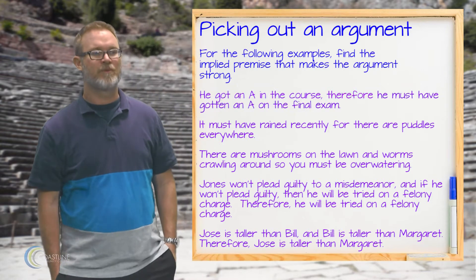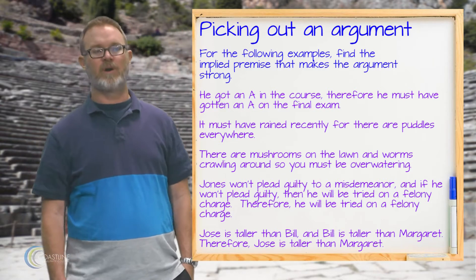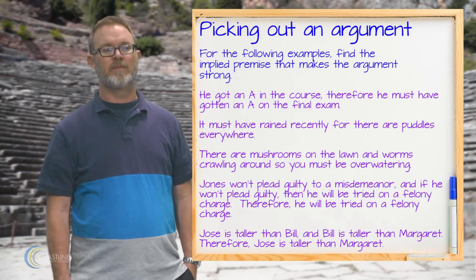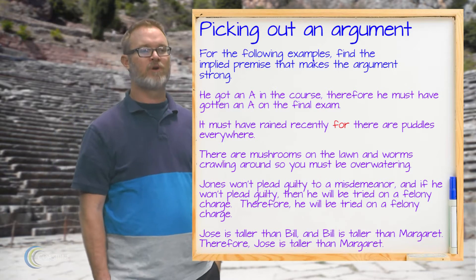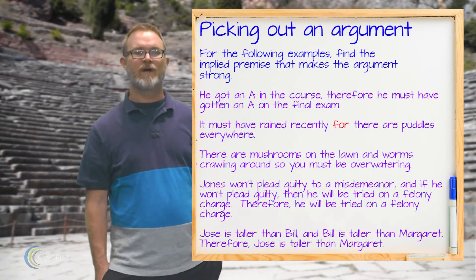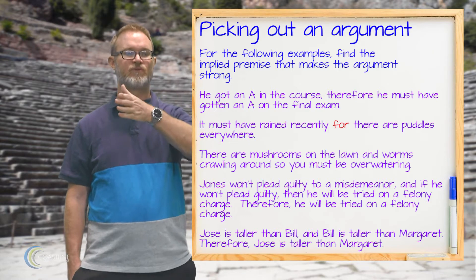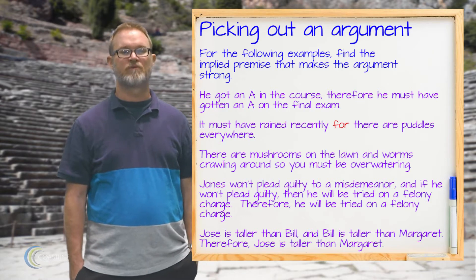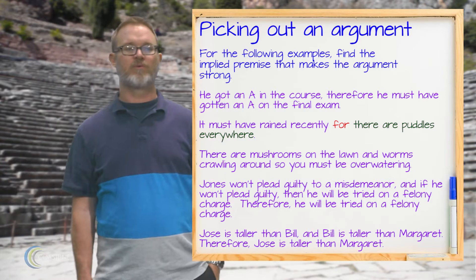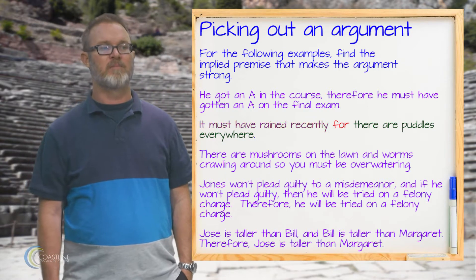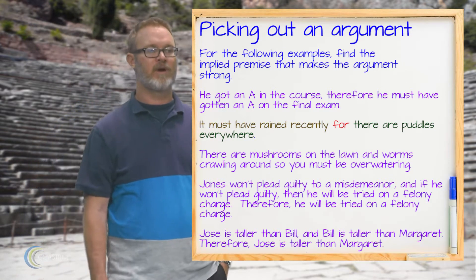Our next example says: it must have rained recently, for there are puddles everywhere. Here we have the 'for' indicator, which is a reason indicator. What follows 'for' is a reason for what's before it. So 'there are puddles everywhere' is our premise, and 'it must have rained recently' is our conclusion.